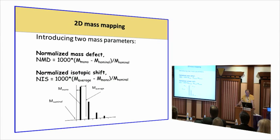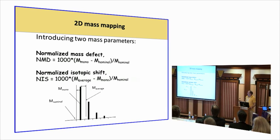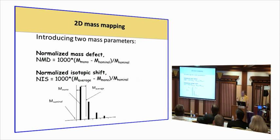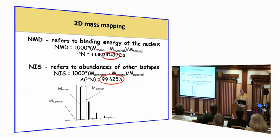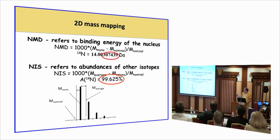If we look at these two values, one referring to the mass defect, we take the mass defect, divide by the nominal mass, multiply for a good measure by 1,000, we get normalized mass defect. These two values are independent of each other because the first one refers to the binding energy of the nuclei, and the second number refers to the abundance of the most abundant isotope, which is very easy to change. And the whole conference is about this. So these two numbers should be independent.